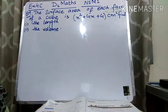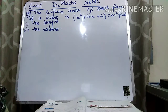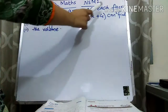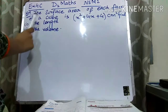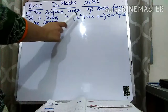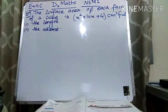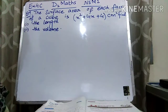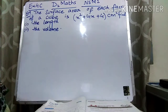So before starting the lecture, I will request you that if you want more help regarding your subject, then you can subscribe the channel. Question number 9: the surface area of each face of a cube is given. Find the length and the volume of a cube. We have to find out the length and the volume of the cube.